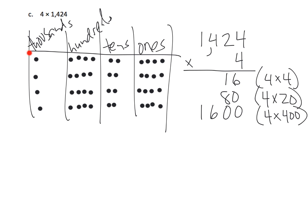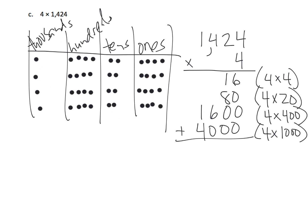Then lastly, we have four groups of one thousand, so four times one thousand gives us four thousand. So over here is our place value chart and over here is our partial products — not quite the standard algorithm yet. Let's simplify the place value chart. We remember that any time you have ten dots you can bundle them for one dot to the left. So these ten ones are going to go away, and we end up with — counting — nine tens, so nothing there needs bundling.